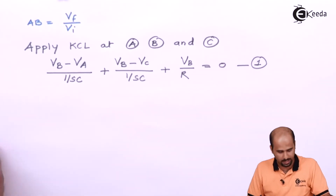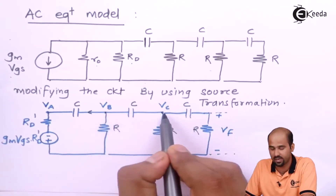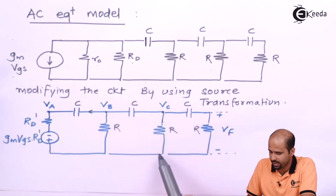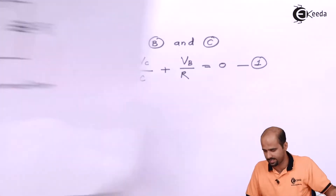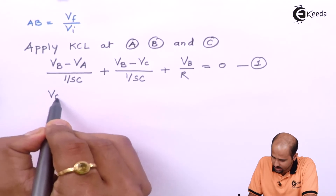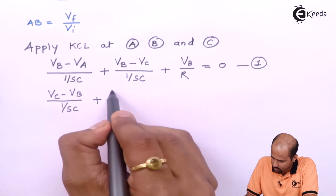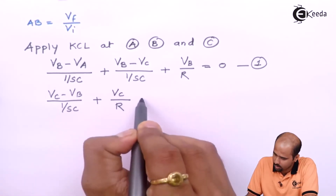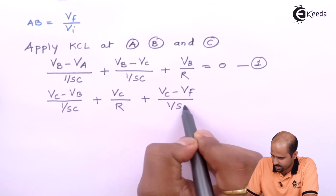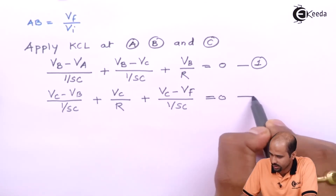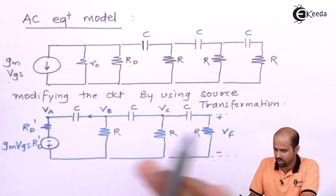The second equation I will be getting from node C: VC minus VB divided by (1/SC), plus VC divided by R, plus VC minus VF divided by (1/SC), equals zero — that is equation number 2. Again, one more equation I will be getting: VA is nothing but GM·VGS into RD-dash plus the voltage across RD-dash.